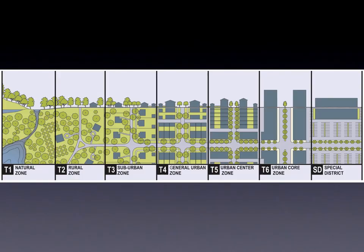Chapter 3: The Transect. The Transect is a spectrum of contexts used for transport and land use design. At one end of the continuum is the natural agricultural area, and at the other end is the central business district. In between, we find varying urban intensities ranging from rural to suburban to more urban zones.